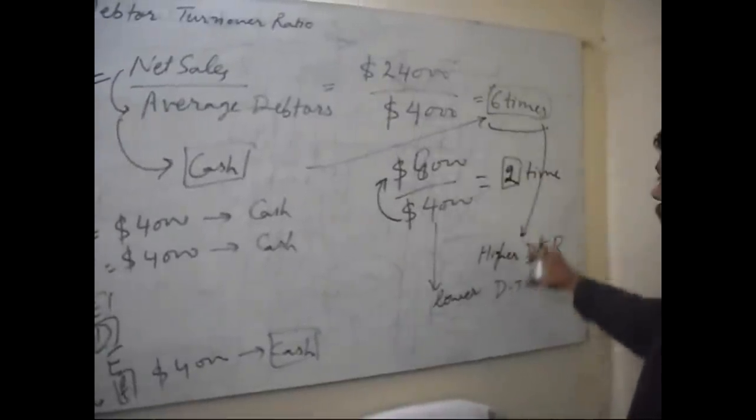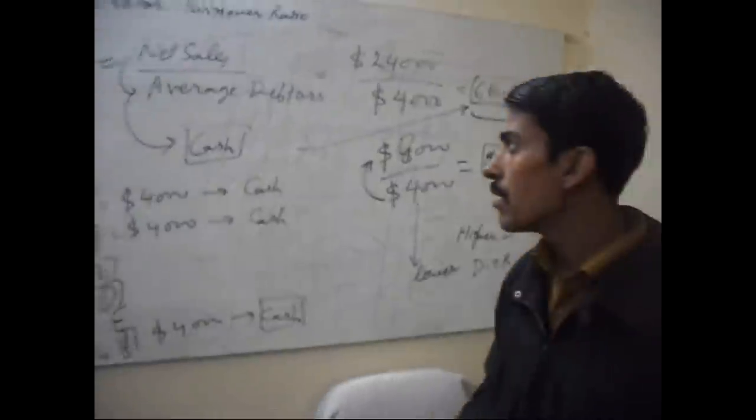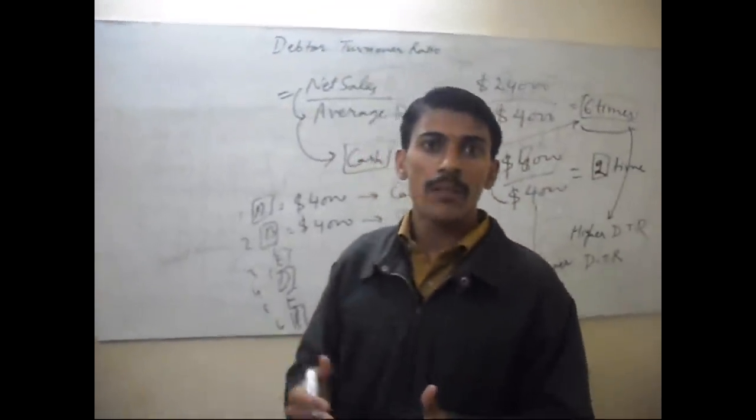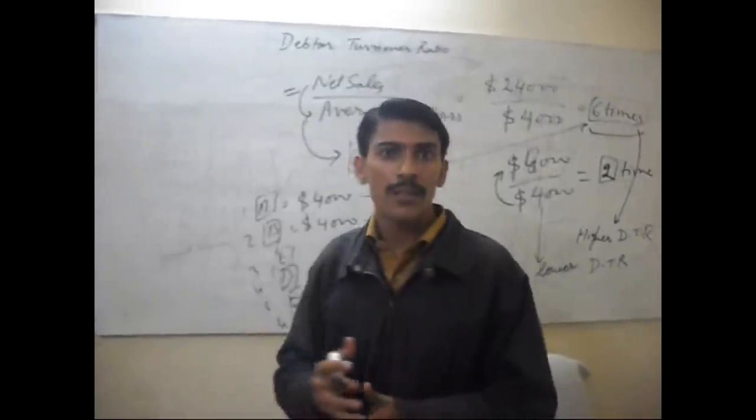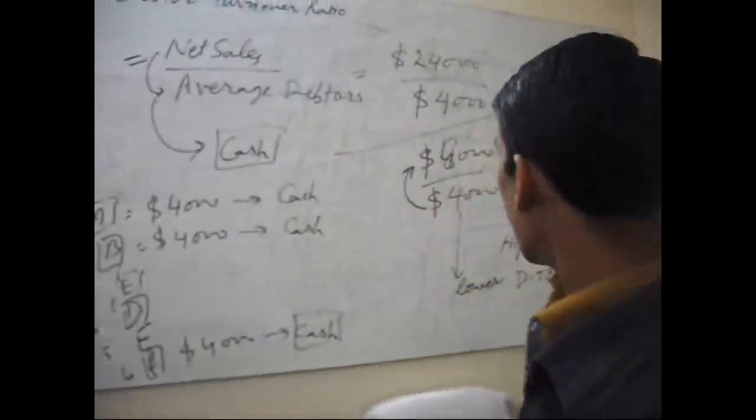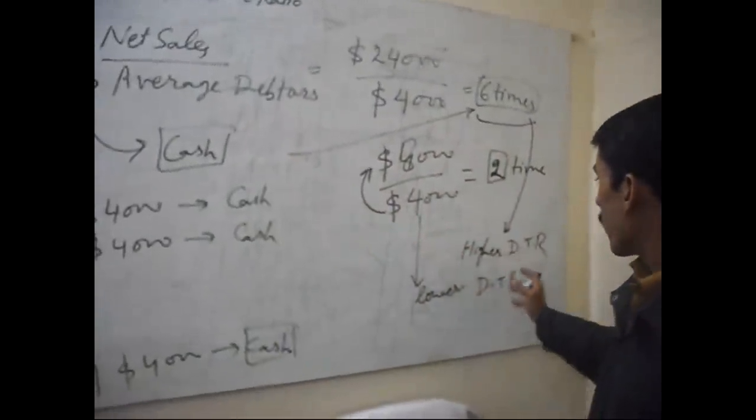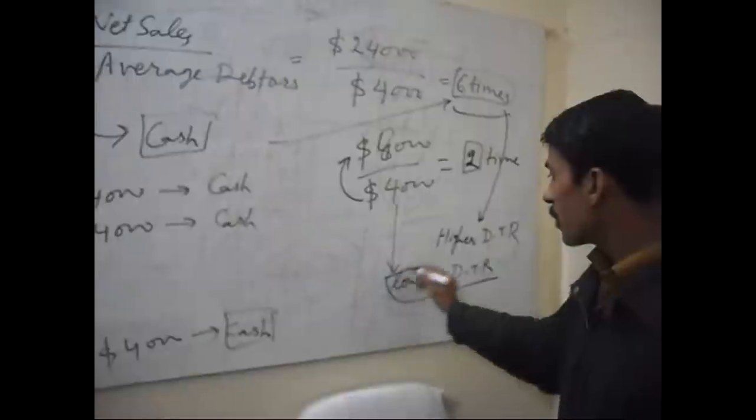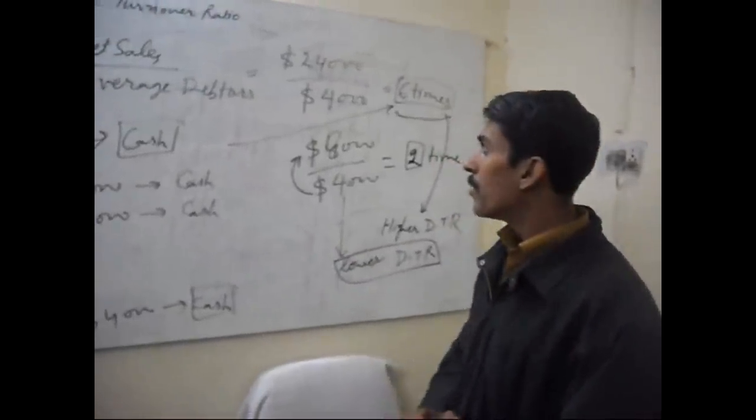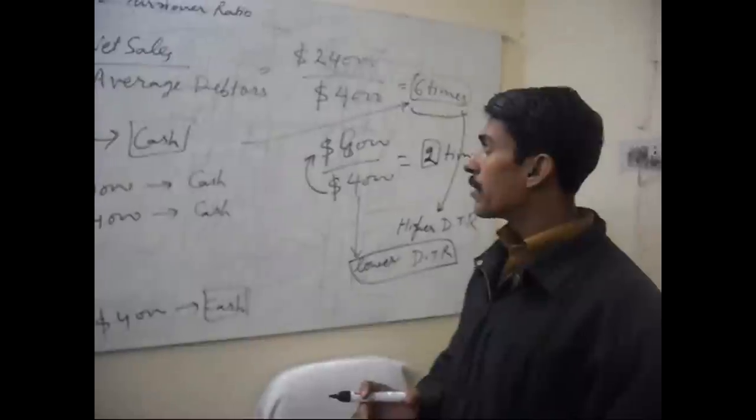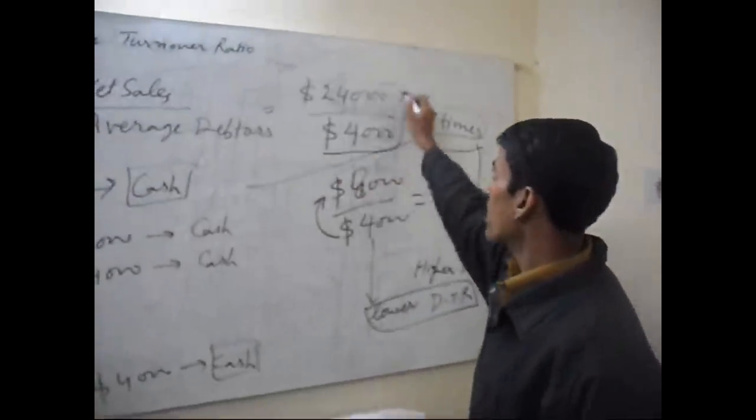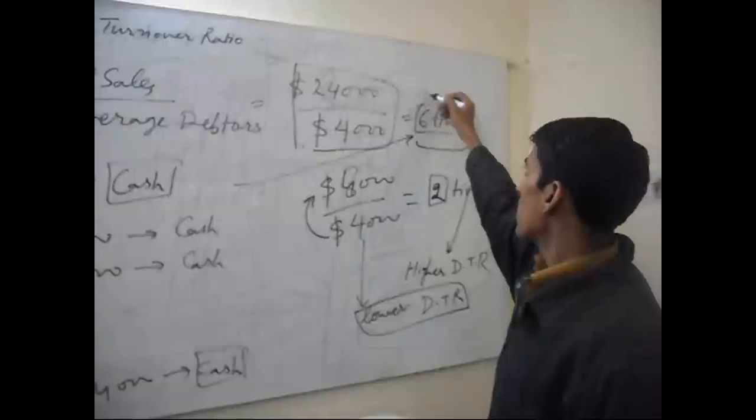Higher debtor turnover ratio means we are collecting funds more quickly from our debtors. Lower debtor turnover ratio means we are not efficient at collecting funds from our debtors. So it is very good if our debtor turnover ratio is higher.